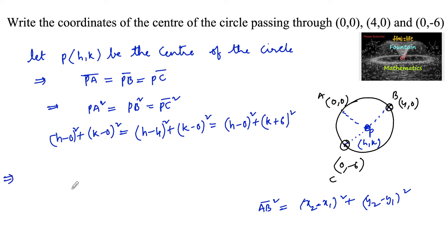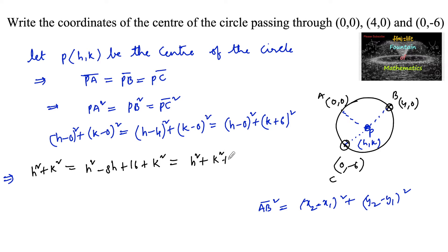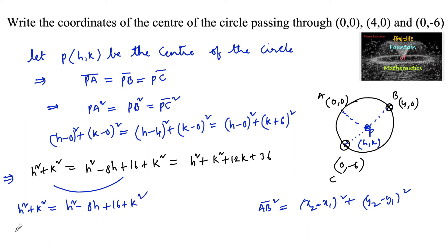So this gives us: H² + K² = H² − 8H + 16 + K² = H² + K² + 12K + 36. Now equating equations 1 and 2: H² + K² = H² − 8H + 16 + K². The H² and K² terms cancel, giving 8H = 16, so H = 2.